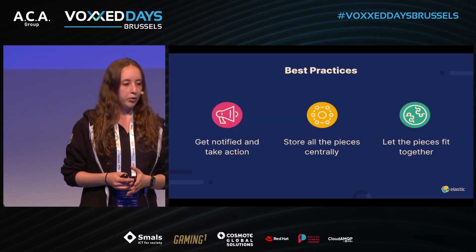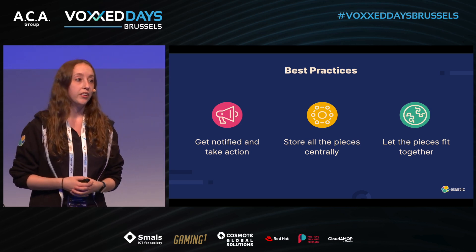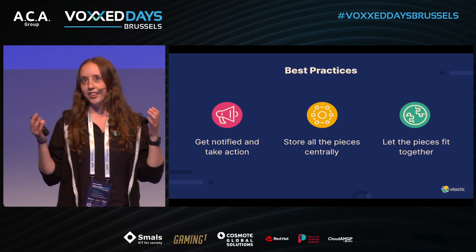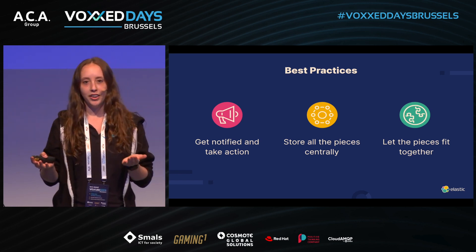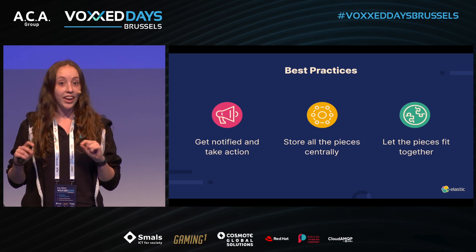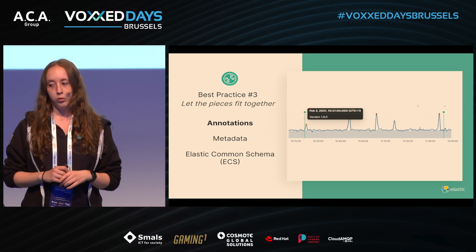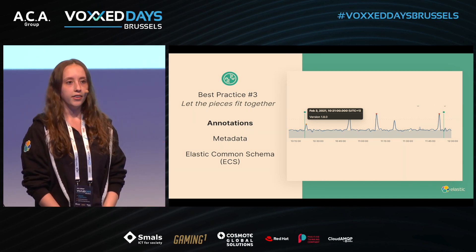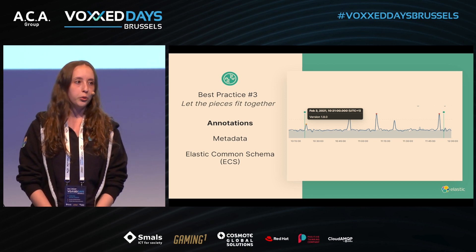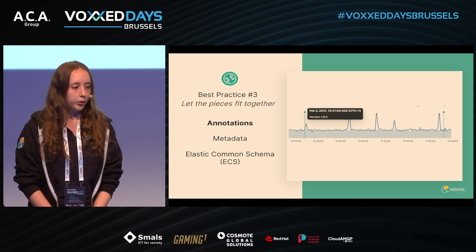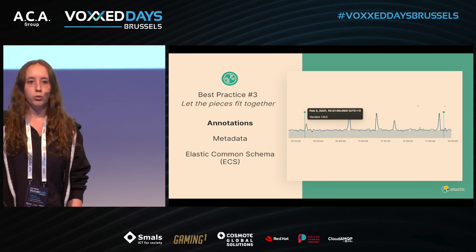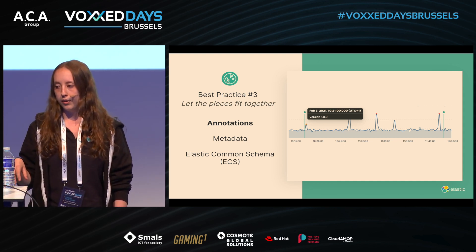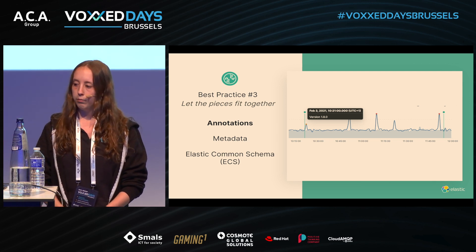The last best practice is letting the pieces fit together. When you know something happened and you have all the context, you need to find out what exactly happened. You can do this with, for example, annotations. You can use annotations in your CI/CD pipeline — for example, when you deploy a new application. You can set an annotation, and then it will show up in a latency graph where you can see when a certain rollout was done.